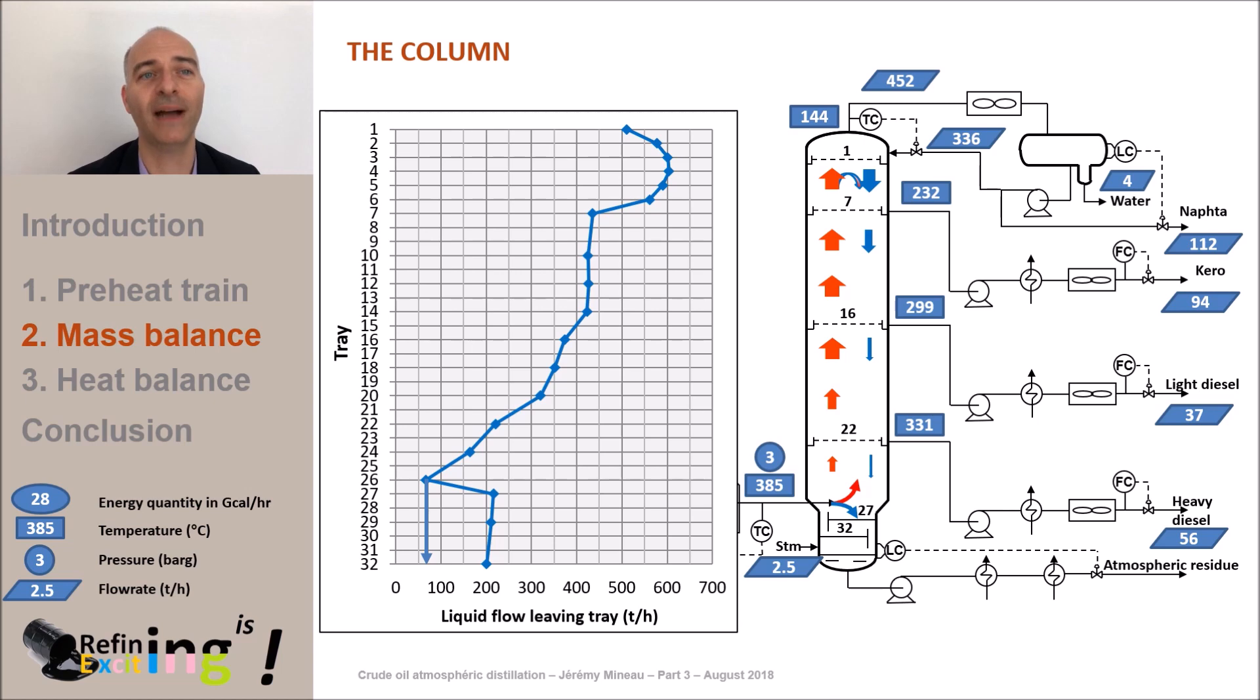Finally, in the bottom of the column, to complete our material balance, we have 201 tons per hour of atmospheric residue coming out of the tower. This residue is withdrawn at a temperature of about 370 degrees C.